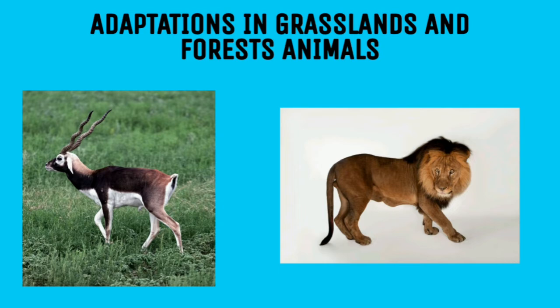Tigers have padded paws, which helps them to silently stalk their prey and capture it easily. The eyes of predatory carnivores are located in front of the head, which helps them to spot their prey from a very long distance.